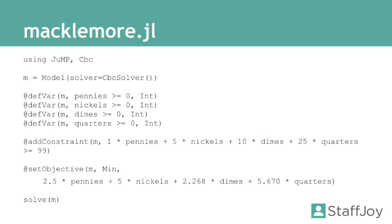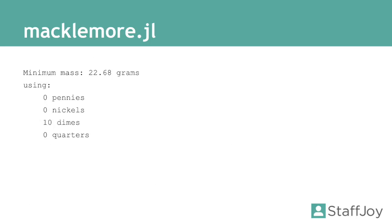Then the objective, we say on the model, we want to minimize this function. We want to minimize the mass. We take the values from the US Mint for the grams per coin, multiply it together, and then solve the model. It's fairly straightforward.